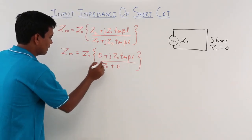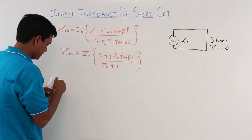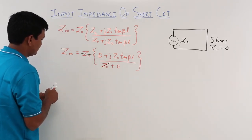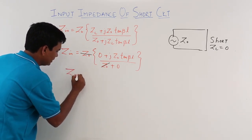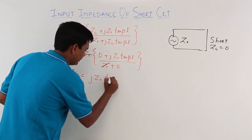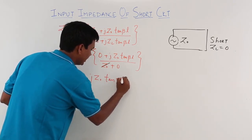If I simplify this further, what will happen? Z₀ divided by Z₀ will get cancelled. So this Z₀ will get cancelled, and what I am left with is Z_in equals j Z₀ tan βL.